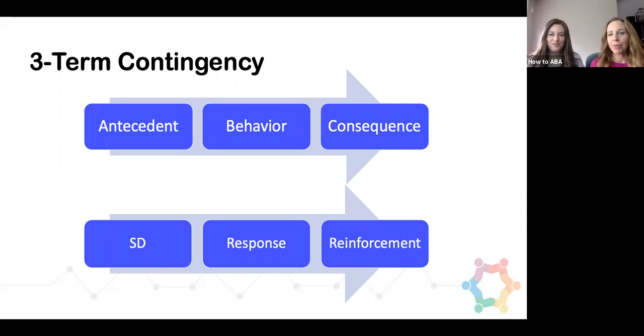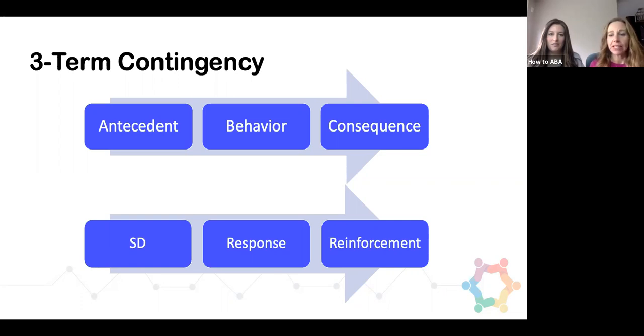What are the ABCs of ABA? That's an acronym for you. A is antecedent — I think we all know that — and then B is behavior and C is consequence. We hear it all the time: ABC.